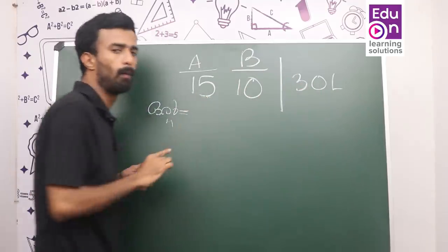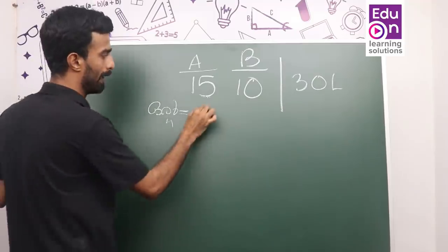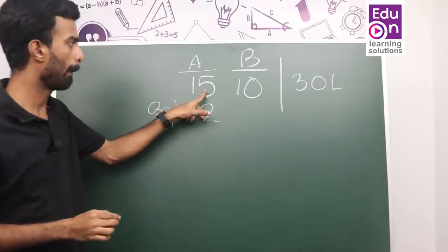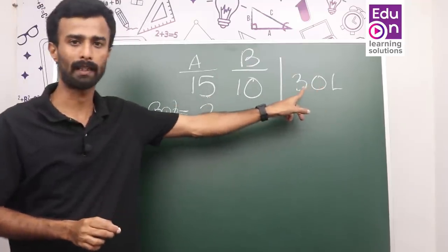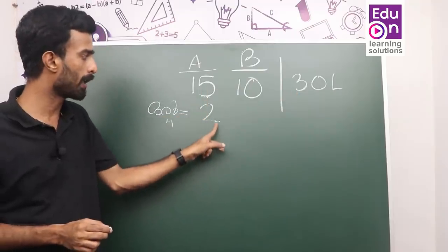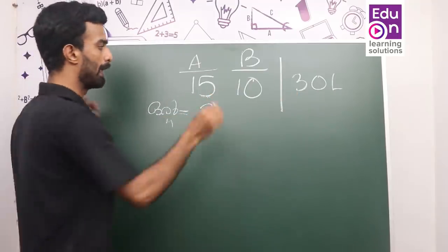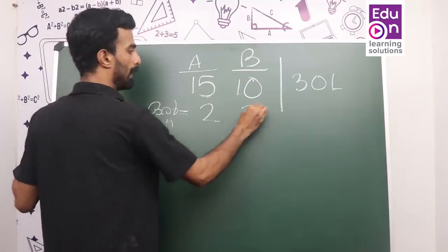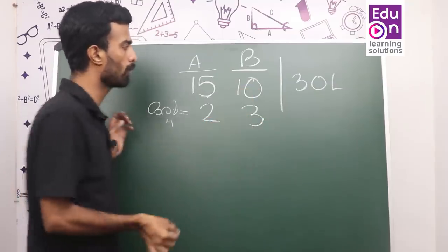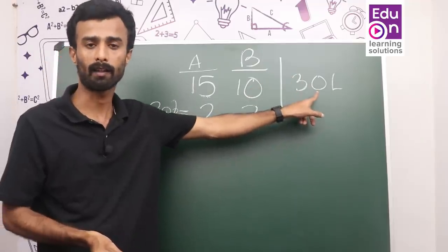Let's take a look at the same time. 15 minutes, 30 minutes. 1 minute, 2 minutes — 30 minutes. 3 minutes, 15 minutes. 3 minutes, 15 minutes. 10 minutes, 30 minutes. 1 minute, 1 minute. 2 minutes, 3 minutes.